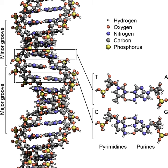In addition to these stacked structures, telomeres also form large loop structures called telomere loops, or T-loops. Here, the single-stranded DNA curls around in a circle stabilised by telomere binding proteins. At the very end of the T-loop, the single-stranded telomere DNA is held onto a region of double-stranded DNA by the telomere strand disrupting the double helical DNA and base pairing to one of the two strands. This triple-stranded structure is called a displacement loop, or D-loop.